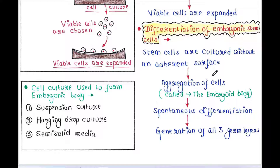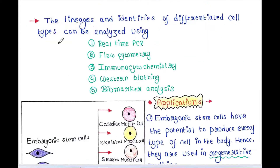For differentiation, embryonic stem cells are cultured without an adherent surface. The cells aggregate and at that point we call them the embryonic body. We allow spontaneous differentiation of the embryonic body, which generates all three germ layers — ectoderm, mesoderm, and endoderm. Cell culture methods used to form the embryonic body include suspension culture, hanging drop culture, and semi-solid media.